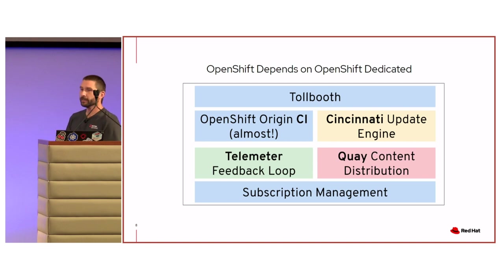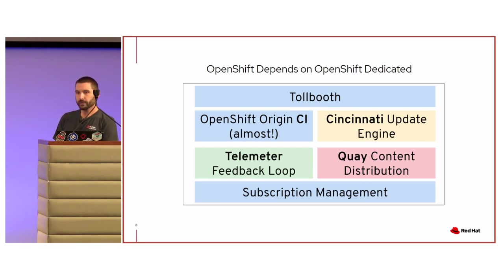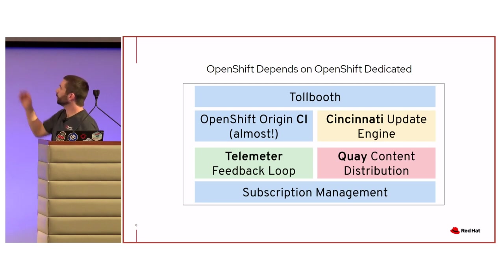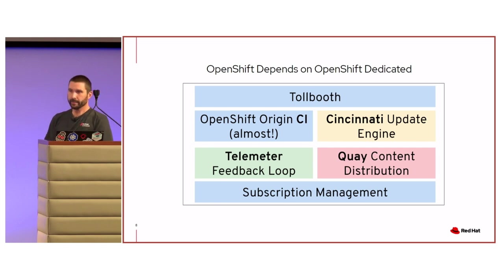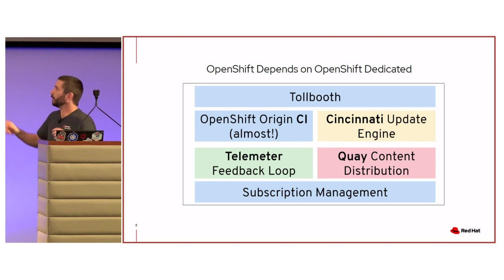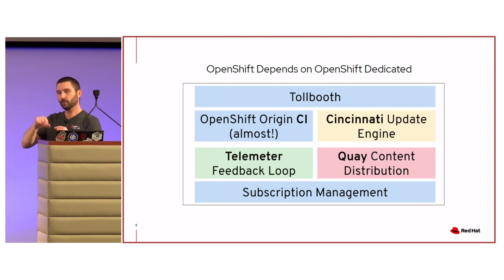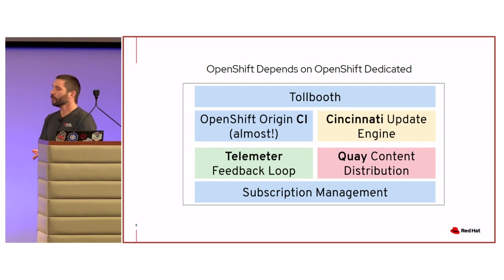Another back-end thing I wanted to mention: OpenShift Dedicated isn't just something external customers use — we use it ourselves to service and deliver OpenShift. Tollbooth is where data comes in and communicates from your cluster to our cluster. Same with the telemeter feedback loop. Cincinnati is the engine that handles upgrades for OpenShift 4 clusters in the field — when you subscribe to the fast channel or the stable channel, those upgrade graphs are hosted in Cincinnati. Quay and all subscription and entitlement management also run on OpenShift Dedicated.